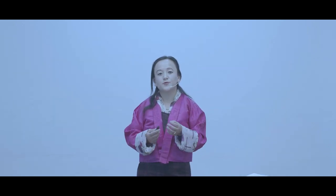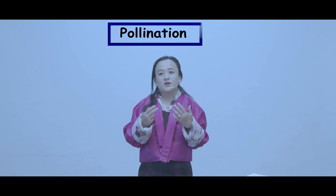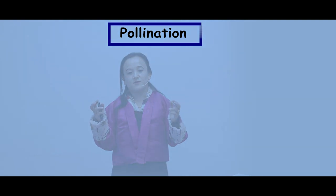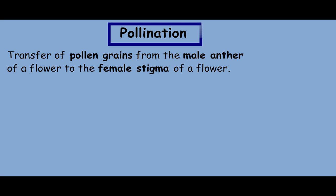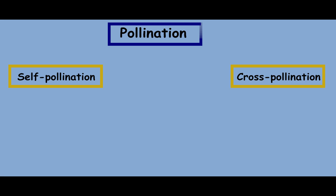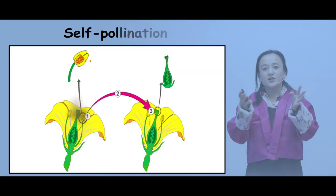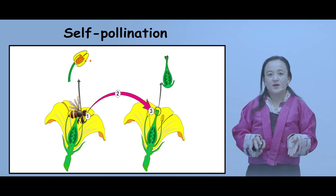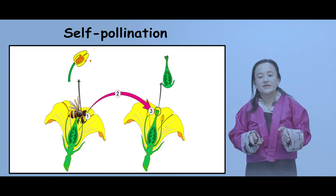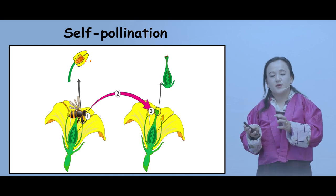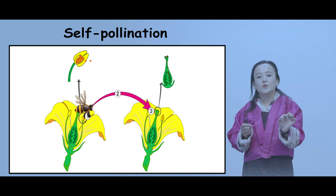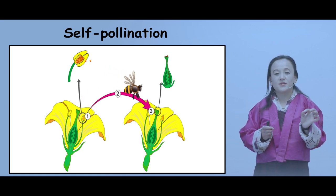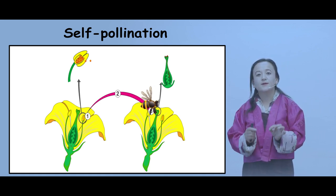Plants reproduce sexually through the process of pollination. Pollination is the transfer of pollen grains from the male anther of a flower to the female stigma of a flower. Pollination can be through self-pollination or cross-pollination. In this diagram, you can see the bee acting as the agent of pollination, carrying pollen grains from the anther to the stigma of the same plant.